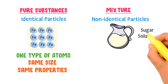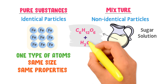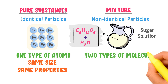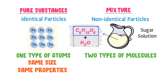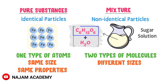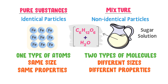Now consider a sugar solution. It is composed of sugar molecules (C₆H₁₂O₆) and water molecules (H₂O), meaning it is made up of two different types of molecules. The size and properties of sugar molecules differ from water molecules. We also know that sugar and water are physically combined to form a solution.